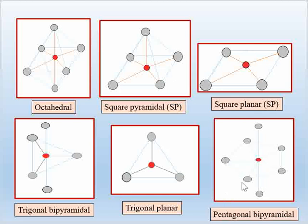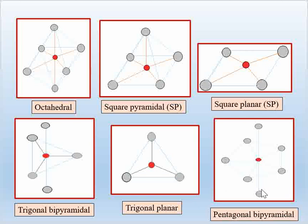The sixth geometry is pentagonal bipyramidal geometry. Here there are five metal-ligand bonds in the pentagonal plane, which is the xy plane, and two ligands are present at the z-axis, above and below this plane. If you can understand these geometries, you can easily understand their splitting patterns.